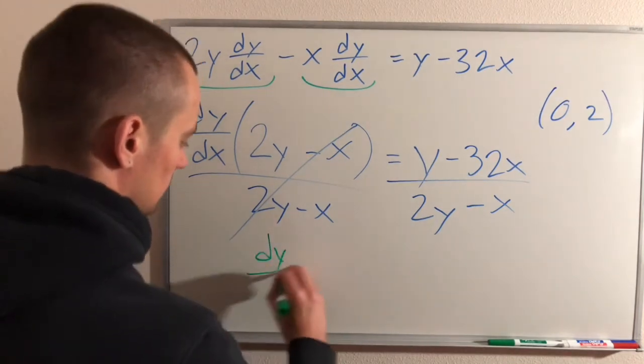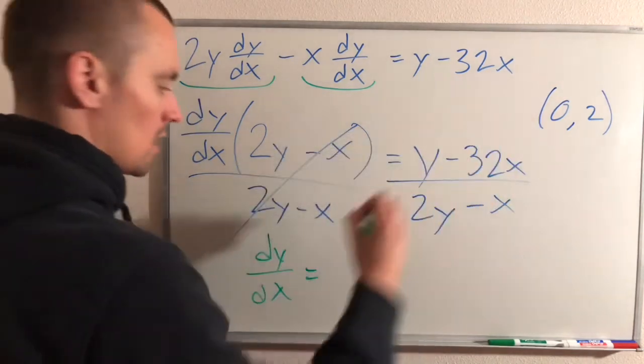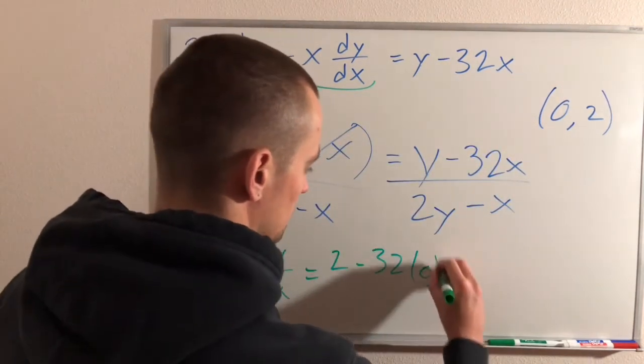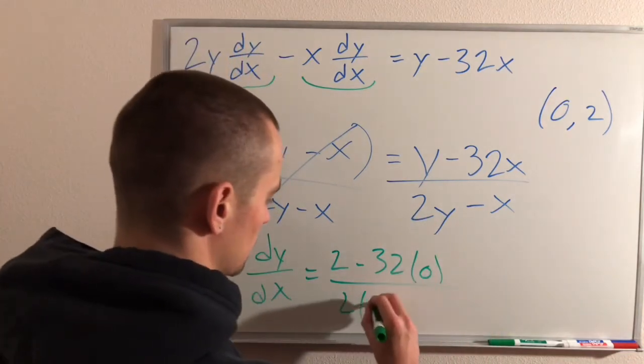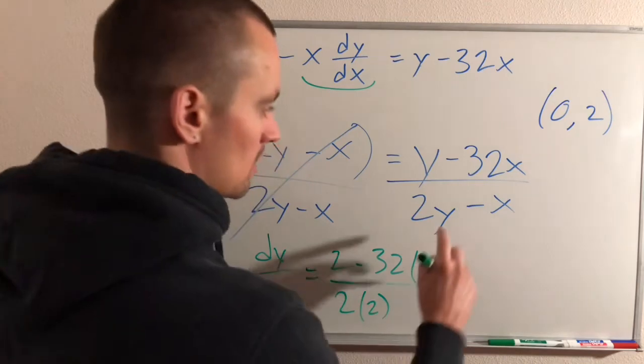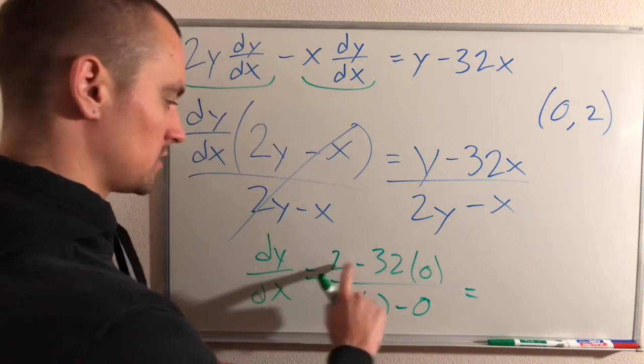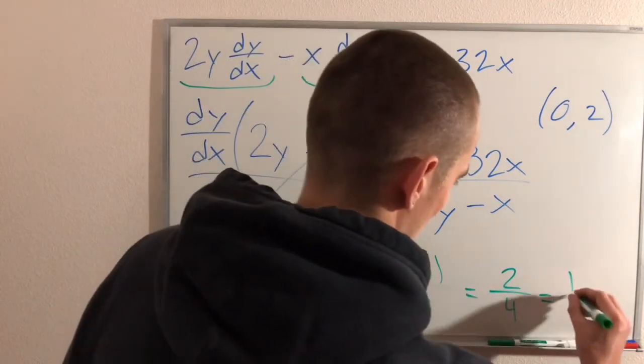So doing that, we'll get dy/dx is y, which is 2 minus 32 times x, which is 0, over 2y, which is 2 times 2, minus x, which is 0, which will give us 2 over 4, which is 1 half.